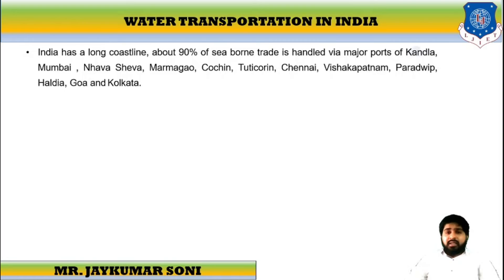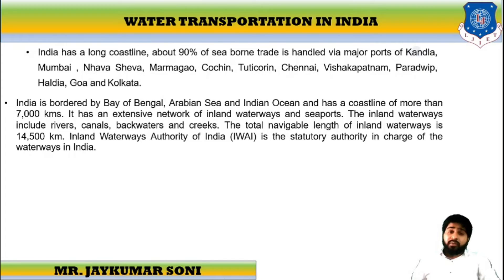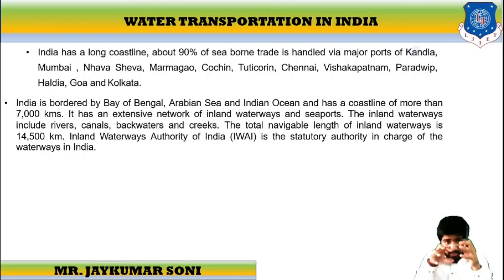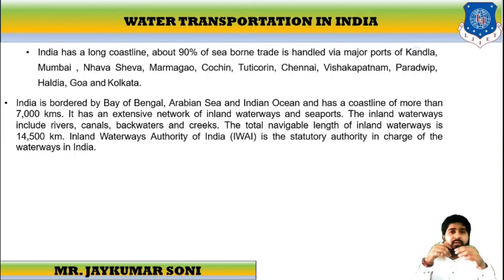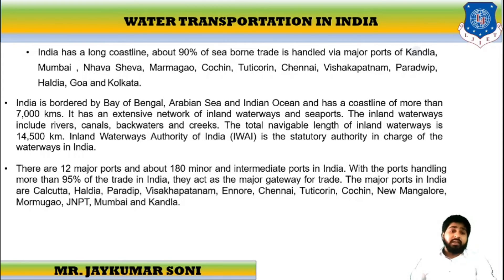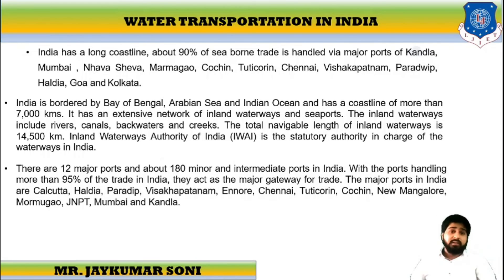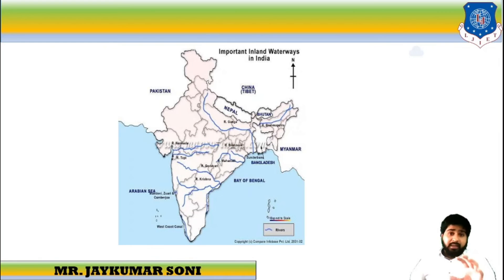Regarding water transportation, India has a very long coastline — about 90% of sea point trade is handled in India. Major ports include Mumbai, Navasheva, Marmagao, Kochi, Tuticorin, Chennai, Visakhapatnam, Paradip, Goa, Kolkata, and Haldia. We have more than 7,500 kilometers of coastline and an extensive network of inland waterways and sea waters, including rivers, canals, backwaters, and creeks. The total navigable length of Indian waterways is about 14,500 kilometers. IWAI — the Inland Waterway Authority of India — is the statutory body in charge of waterways.